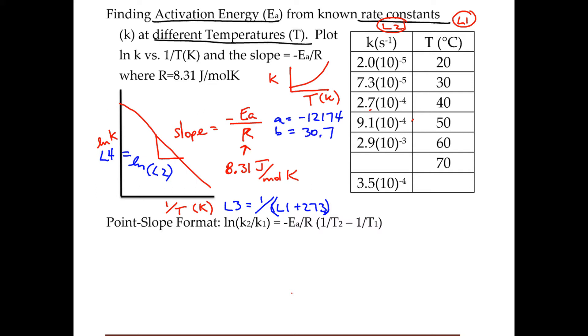So what that tells you is you could find the activation energy now. So I'll do that over here. The slope is negative 12,174. That's going to equal negative activation energy over R, which is 8.31. And this number comes out to be 101,165.